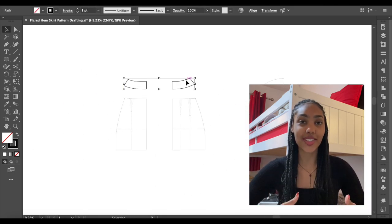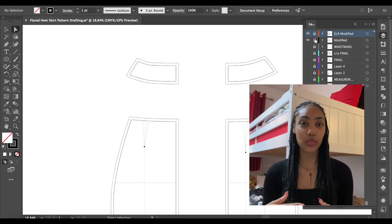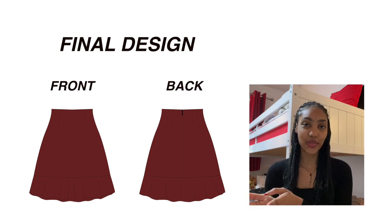shorten the skirt and then add the flounce on. Once I did that, I went ahead and printed out my pattern and cut out my sample fabric, but you'll see the process of all of that now.